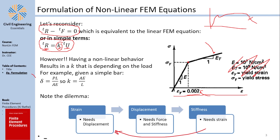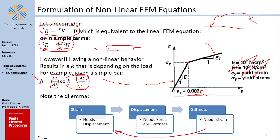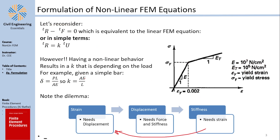For a simple bar element under two forces, the extension delta equals PL over AE, so the stiffness K equals AE over L. The problem is: which E do we use — the elastic E or the tangential E? Since E is not constant, K is not constant, and this creates a chicken-and-egg problem.